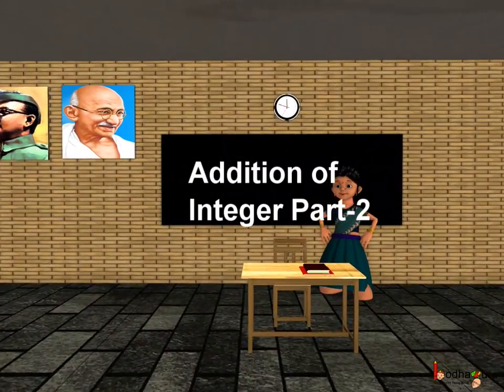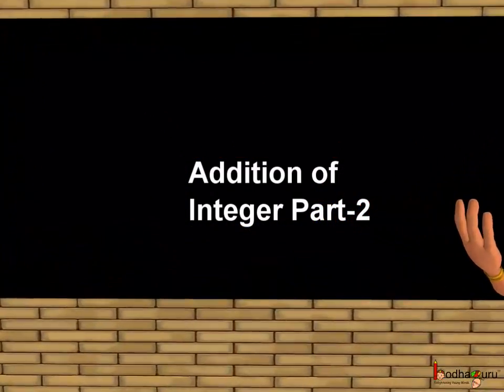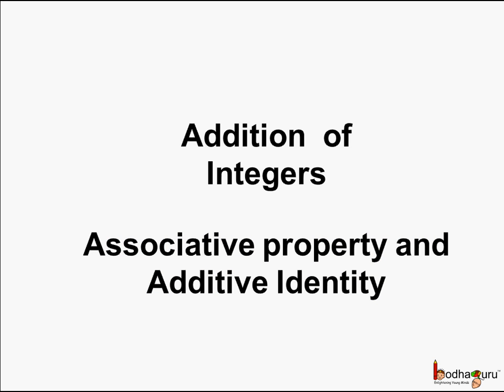Good morning children. Now we know two properties related to addition of integers, which are closure property and commutative property. Let's see another properties related to addition of integers, which are associative property and additive identity.